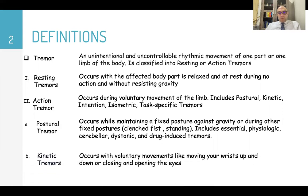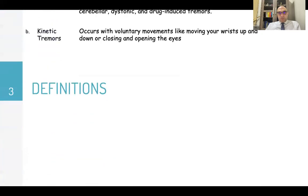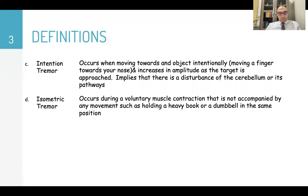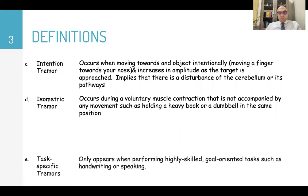Kinetic tremors occur with voluntary movement like moving your wrist up and down or closing and opening your eyes. Intention tremor occurs when moving toward an object intentionally — for example, moving a finger towards your nose — and it increases in amplitude as the target is approached, implying a disturbance in the cerebellum or its pathways. Isometric tremor occurs during voluntary muscle contraction not accompanied by any movement, such as holding a heavy object in the same position.